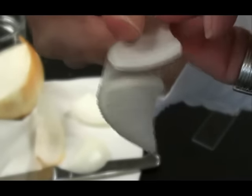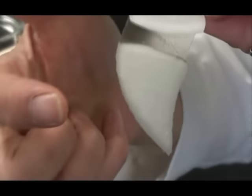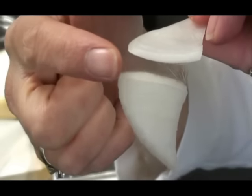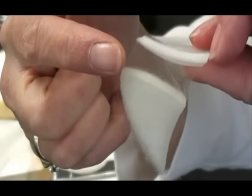There's a thin, transparent layer of cells holding these two pieces of the onion layer together. That's the layer of epidermal cells that I'm looking for for my specimen.